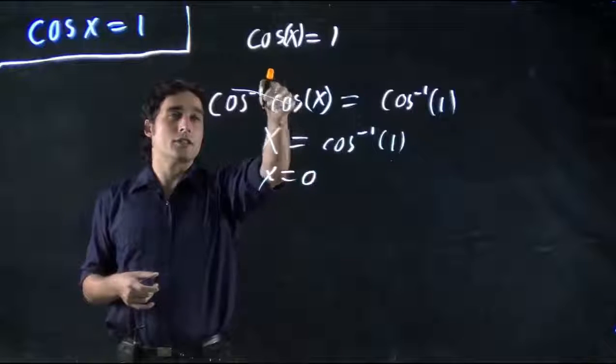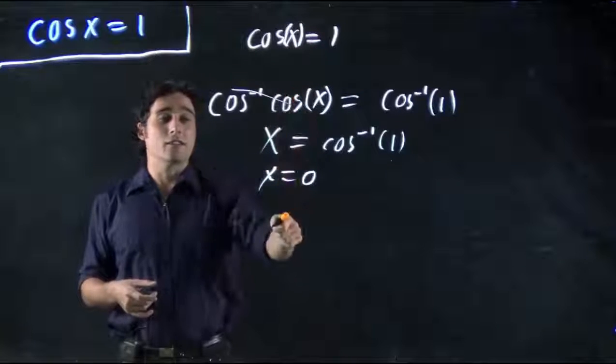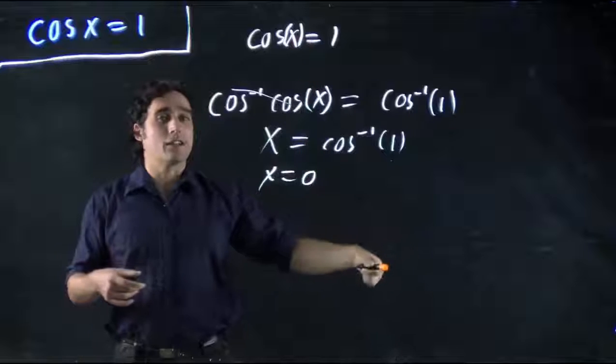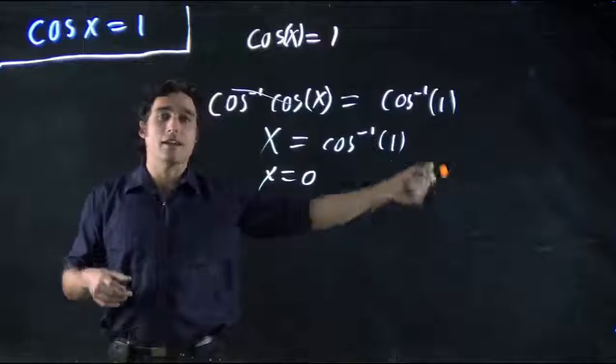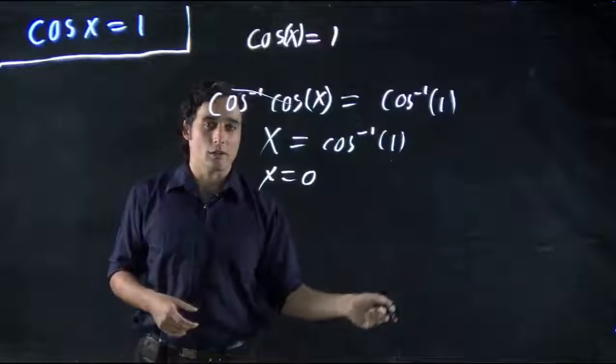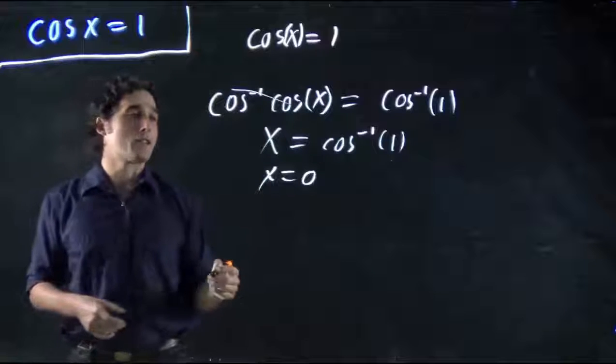So cos x will be equal to 1 at 0, but also again later on, and then again, and again, and again, and again. Because it keeps on going. It's that sinusoidal repeating function.